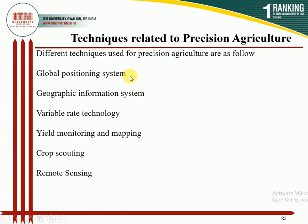To summarize the techniques: GPS tells the definite location of a particular object; GIS compiles all data from different technologies and generates a map; variable rate technology allows different amounts of agrochemicals to be spread into the field; yield monitoring and mapping helps analyze variation within the field; crop scouting monitors variation in crop population caused by pests, insects, and weeds; and remote sensing gathers information without physical contact with the object.